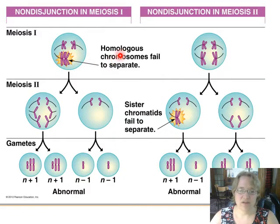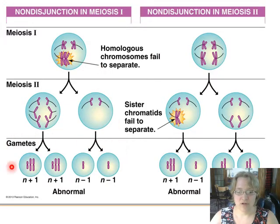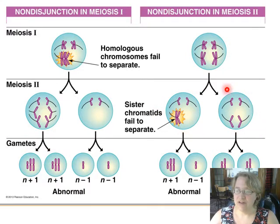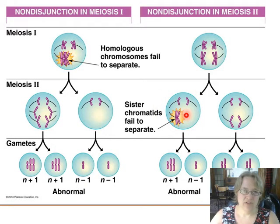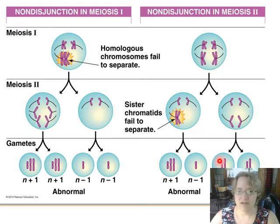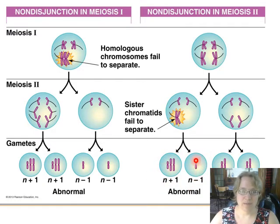To summarize: if we have non-disjunction in meiosis I, that's the homologous chromosomes failing to separate, in which case all of our gametes end up with an abnormal number of chromosomes. If we're in meiosis II, it's less severe — only in one of the secondary oocytes do the sister chromatids fail to separate. So half of our gametes have the correct number of chromosomes, and only half have either a nullosomic or a disomic event.